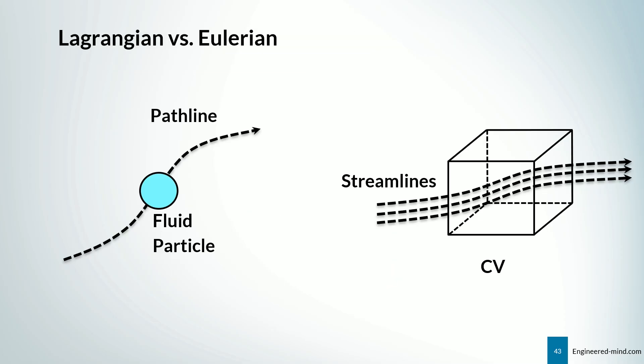So for more information, have a look at this slide right here. So if we have a Lagrangian reference frame, we follow our fluid particle. And if we do that, we get something called the path line. And if we are in the Eulerian system, we have a fixed volume. And we look at the volume and how the fluxes change inside of the volume over time, which is nothing else than the Eulerian frame.